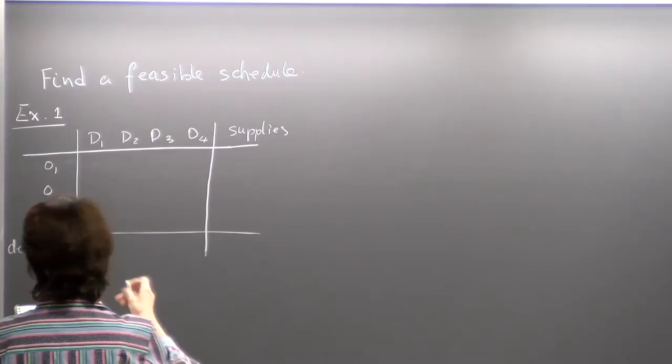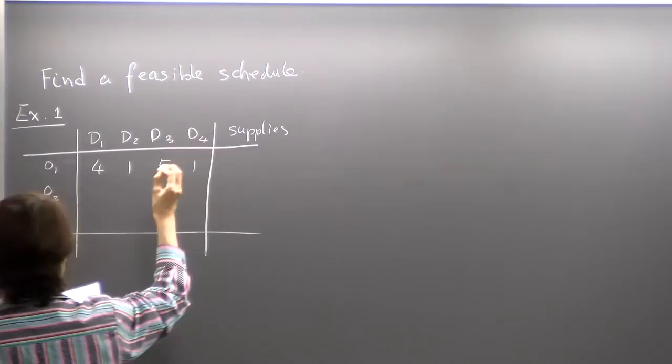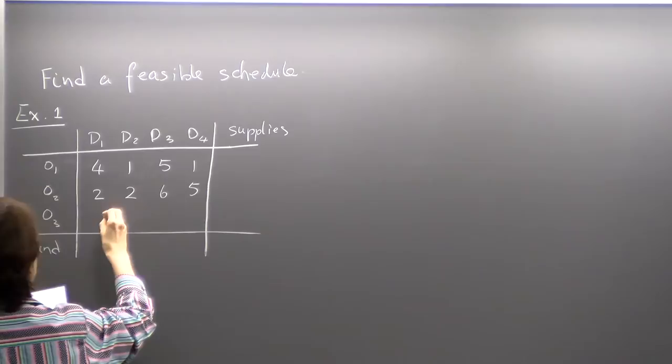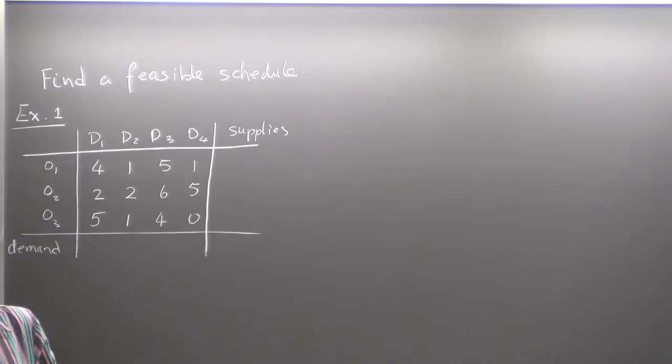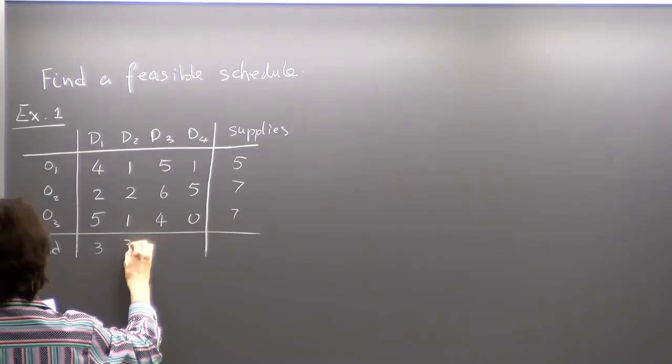Let me put in: 4, 1, 5, 1 — these are just numbers — 2, 2, 6, 5. In the middle, what I put in will be the shipping capacity. So from O1 to D1, I can ship maximum four units. And that's the capacity. Then I have the supply: 5, 5, 7, and 3, 3, 9, 4 as my demand.